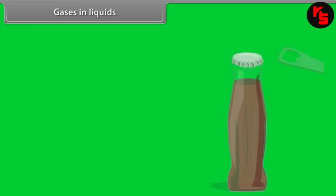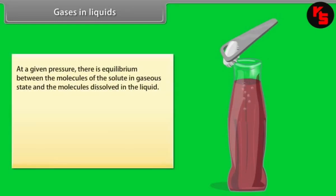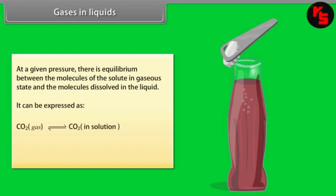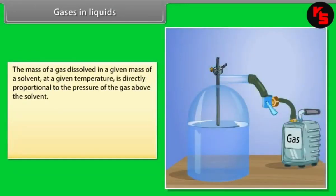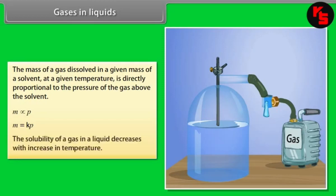Gases in Liquids. When a cold drink is opened, the carbon dioxide dissolved fizzes out rapidly. At a given pressure, there is equilibrium between the molecules of the solute in gaseous state and the molecules dissolved in the liquid. The effect of pressure on the solubility of a gas in a liquid is given by Henry's Law, which states that the mass of a gas dissolved in a given mass of a solvent at a given temperature is directly proportional to the pressure of the gas above the solvent: M = Kp. The solubility of gas in a liquid decreases with increase in temperature.